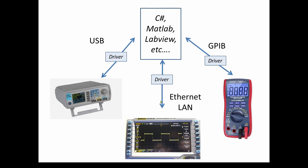We also see that different devices might have different communication protocols. My signal generator has USB — universal serial bus. My oscilloscope has Ethernet, local area network, Ethernet LAN, and it also has a USB connection. You might have other devices that have what's called GPIB. So there are multiple different communication protocols. Ideally, if you're going to communicate with different devices, you need something in your drivers or software that recognizes these different communication protocols.